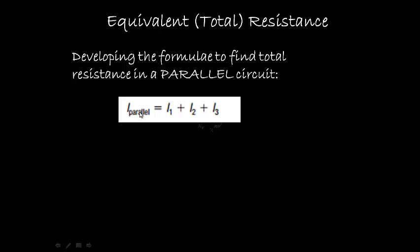So in our case we're saying that total current equals current through resistor 1 plus current through resistor 2 plus current through resistor 3.